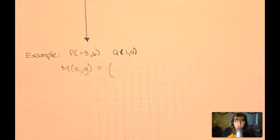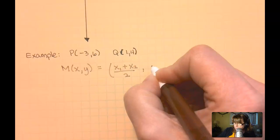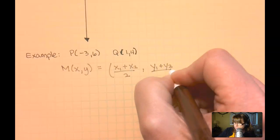And I'm going to copy down my formula, x1 plus x2, all divided by 2. And that is grouped together with y1 plus y2, all divided by 2.